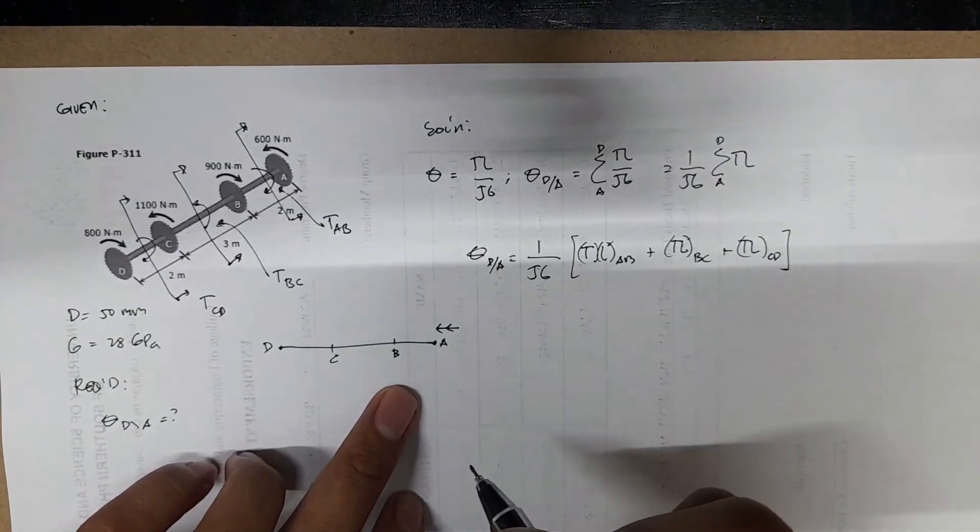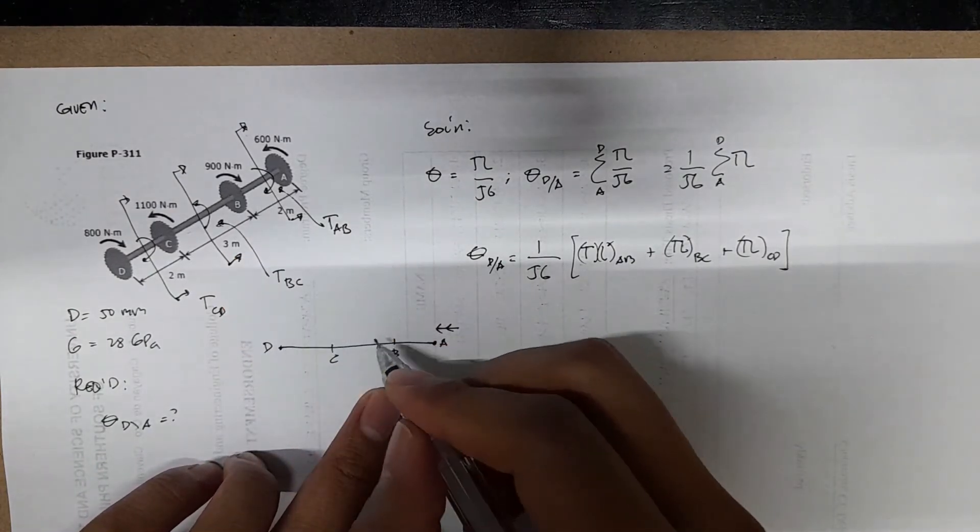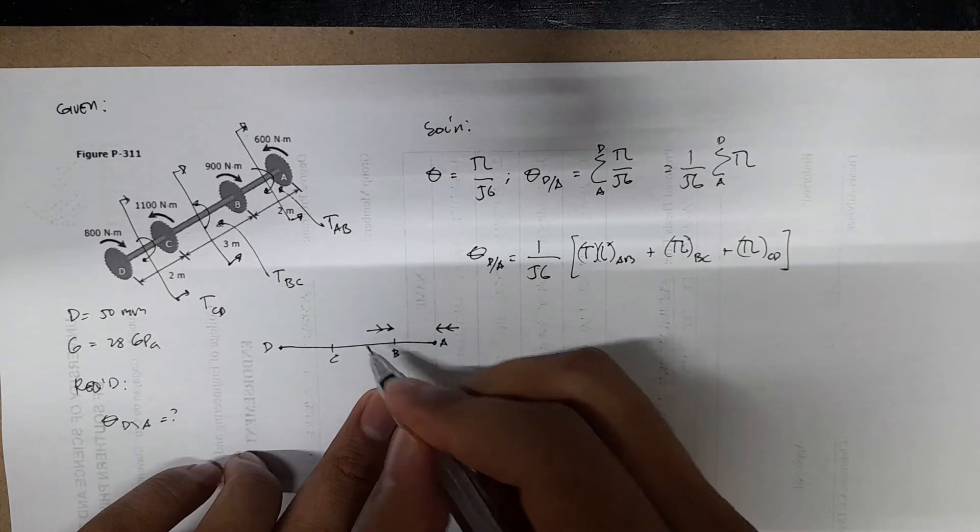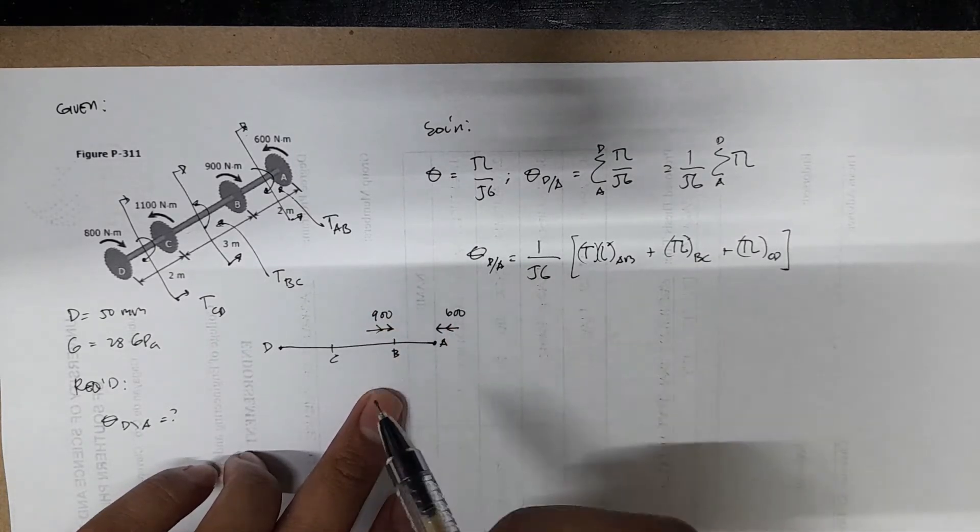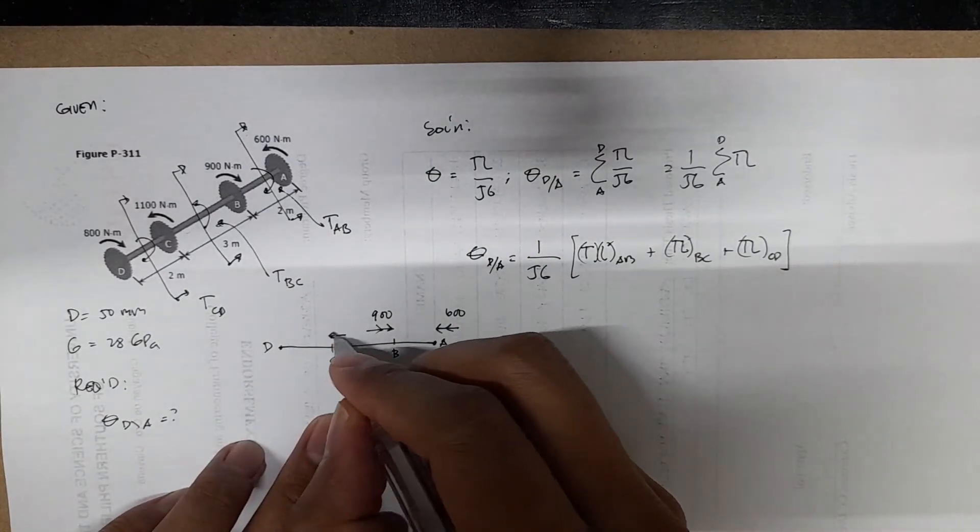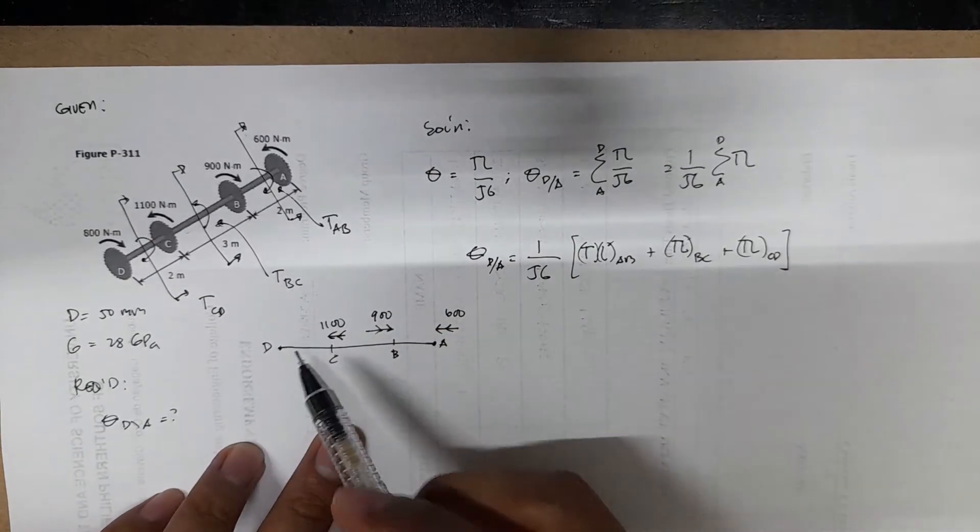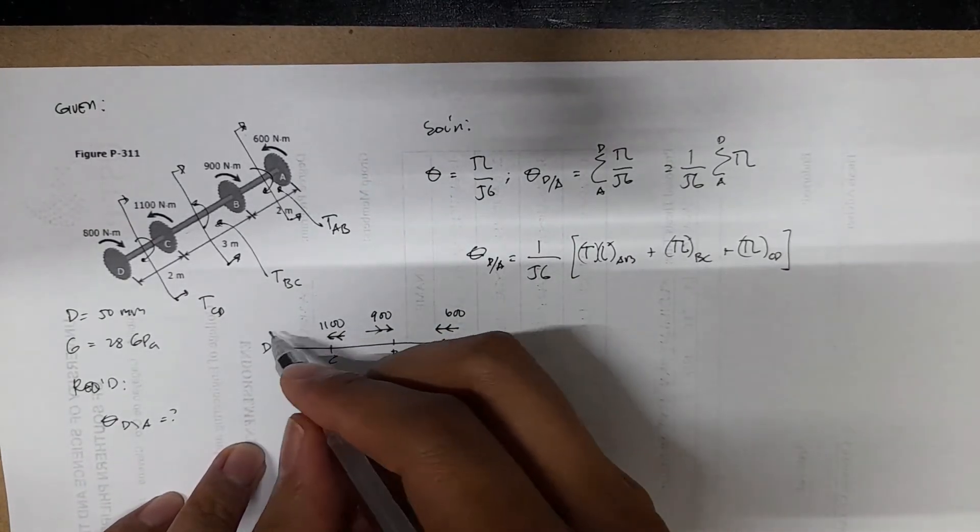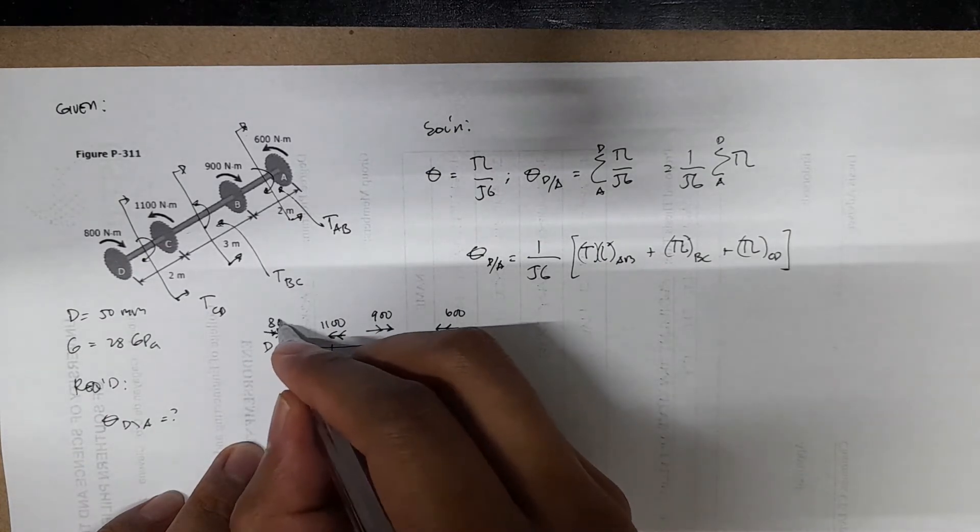At point B, you will have the opposite direction, we'll have 900, which is 600. And then you have at C, you have the direction same with A, which is 1100. And at D, you will have opposite direction, which is 800.